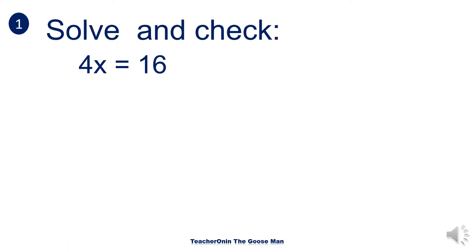Let's have our example number one. Solve and check: 4x is equal to 16. We want to find out the value of x that will make the equation true. Here we will use the multiplication property of equality.